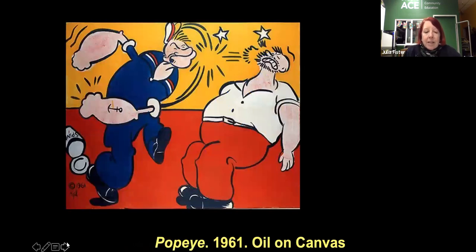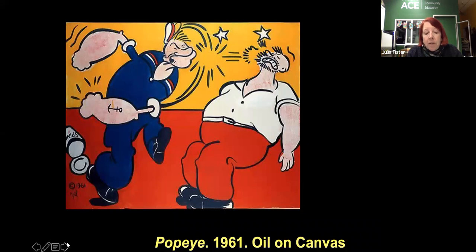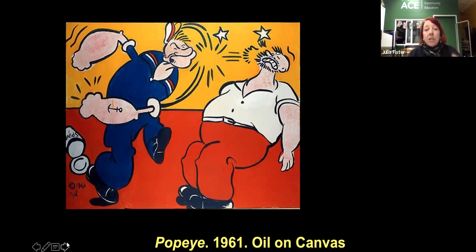While Lichtenstein's work draws on popular imagery from advertising and cartoons, it also involves a degree of appropriation. The artist himself acknowledged that the act is really one of transformation. He said, 'I am nominally copying, but I am really restating the copied thing in other terms. In doing that, the original acquires a totally different texture.' By taking the comic strip and using it as he does, he conflates the powerful but so-called low mass-produced commercial image with the traditionally venerated medium of large-scale easel painting — an interesting marriage of the two.